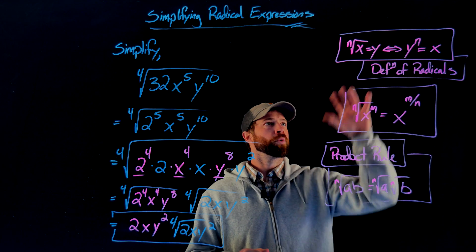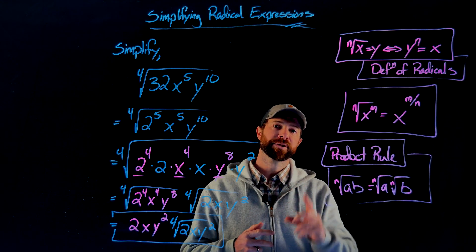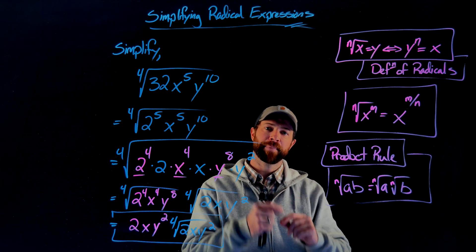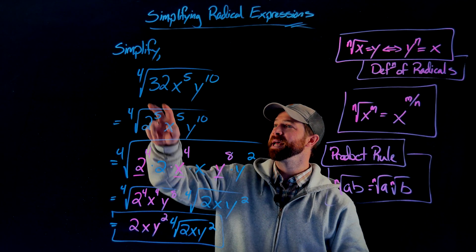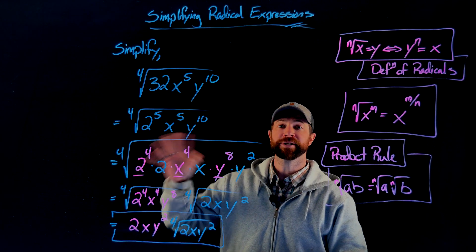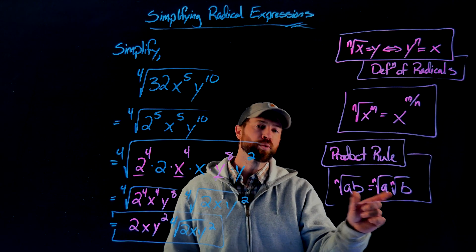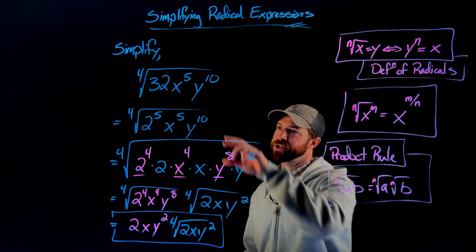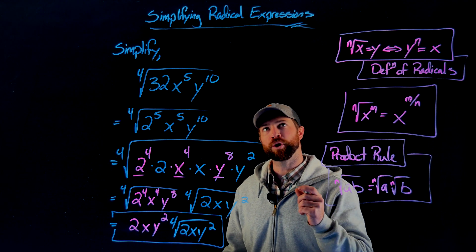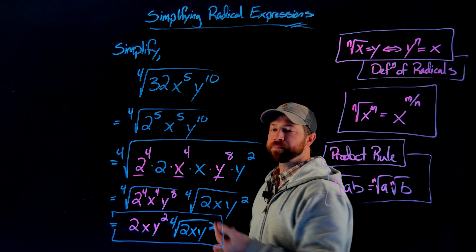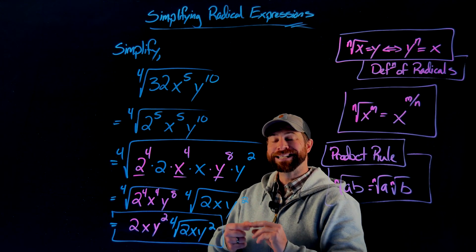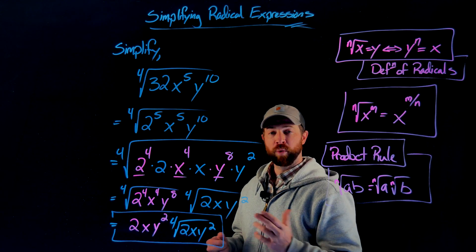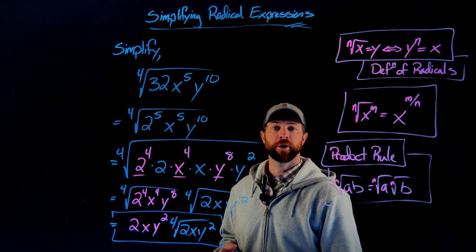To recap: radicals are the inverse of applying exponents. For variable expressions, applying the nth root to an exponential expression means dividing the exponent by the index. Prime factorization makes this even easier since every factor becomes an exponential expression. The product rule lets us attack each individual factor separately, which is critical when some exponents aren't divisible by the index — split those factors into the largest multiple of the index and the remainder to reach the fully simplified form.